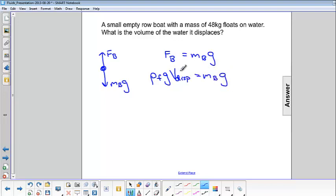Since g is on both sides, we can divide both sides by g. And we have density of the fluid times the volume displaced is equal to the mass of the boat.